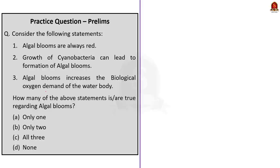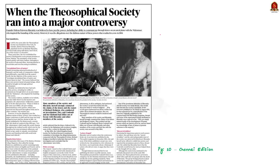These are some of the important points to remember about red tide — what causes it and why red tide occurs more on the west coast of India than the eastern coast. Now let us move on to the next news article, which talks about the Theosophical Society and related controversies.